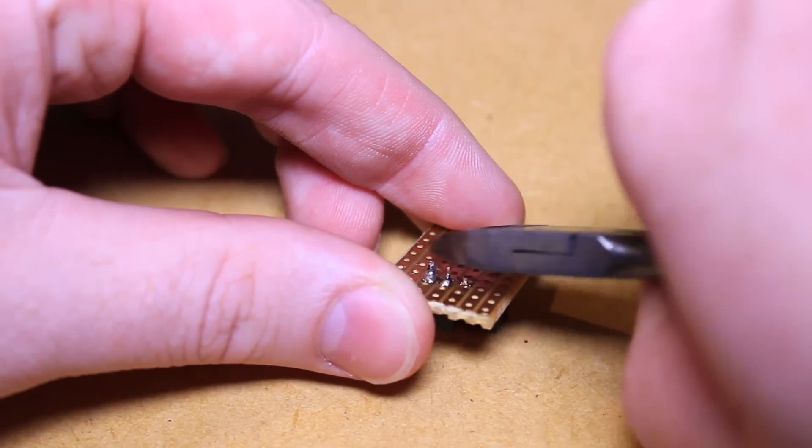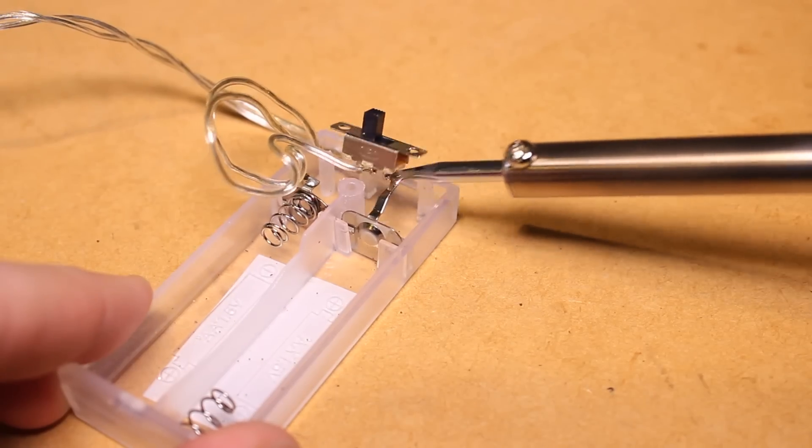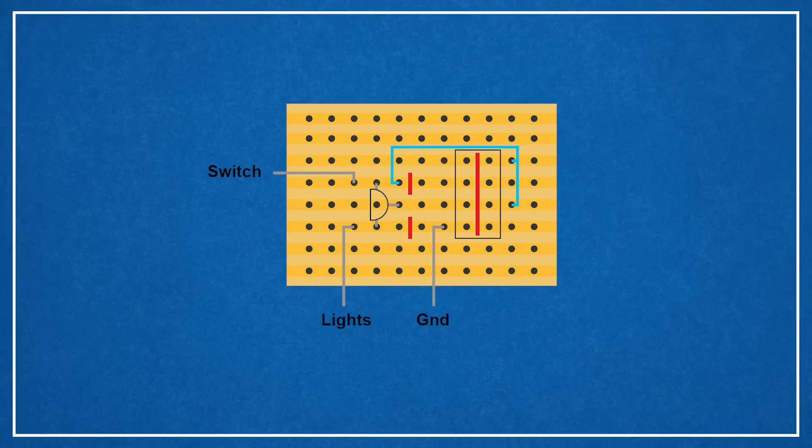After soldering all of the components in place, we can then solder a wire from the switch to the strip board. This will provide power for both the ESP module and the lights.